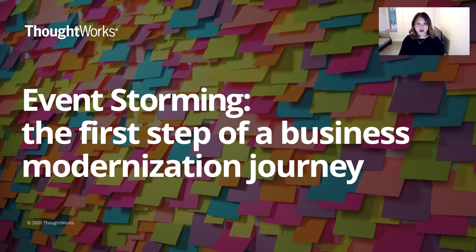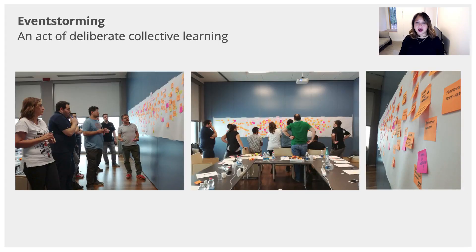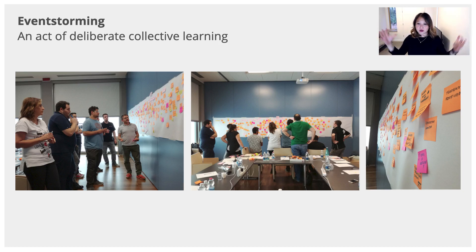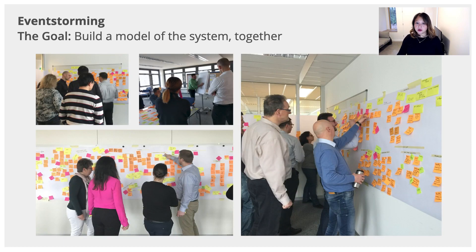Let's get started with event storming in itself. This is an actual act of deliberate collective learning. If you look at these photos, it really has both the business and the technical stakeholder in a massive room, crowding around a whole wall of stickies. The goal of this is to build a model of the system together — it is about shared understanding and avoiding miscommunication or misunderstanding of what a domain actually is.